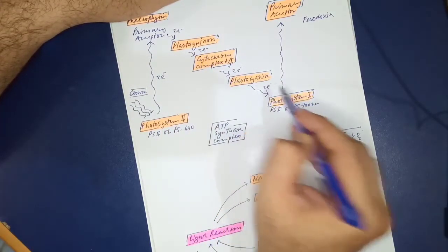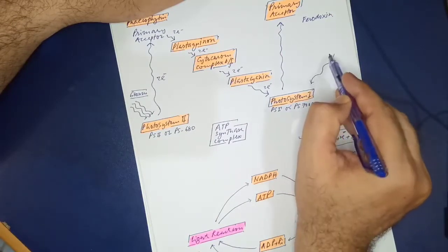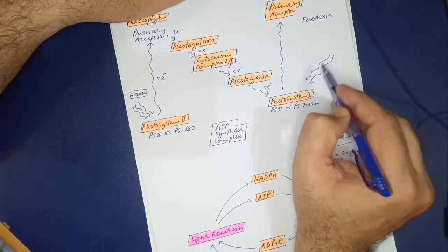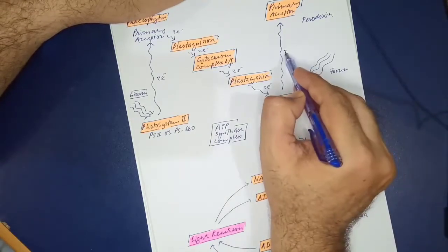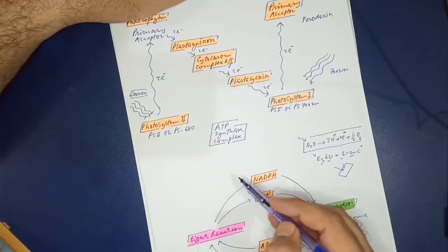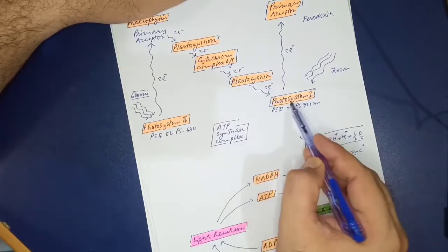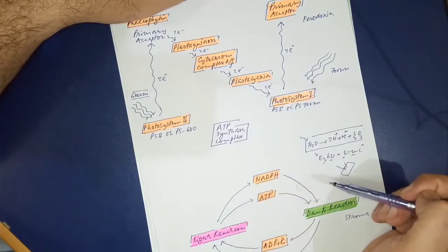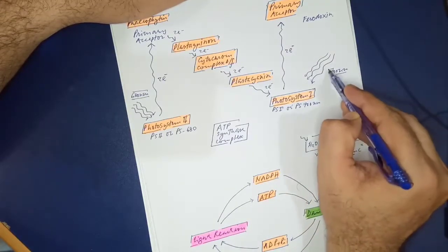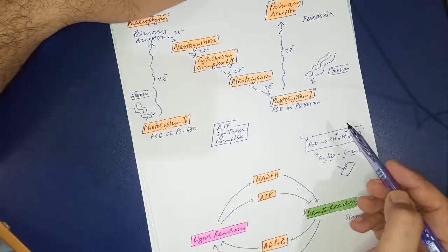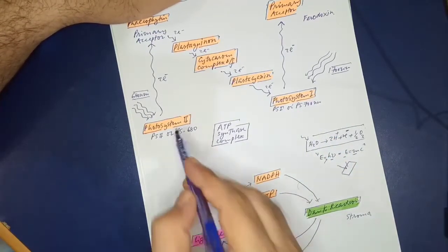The electrons traveling from PS2 eventually reach Photosystem 1. There, 700 nm light has also excited PS1, causing it to lose two electrons. The two electrons arriving from PS2 replace those lost electrons of PS1. So PS2 electrons replace PS1's lost electrons.